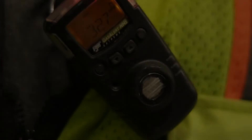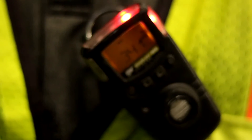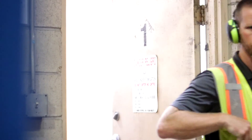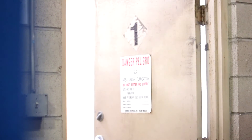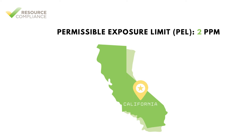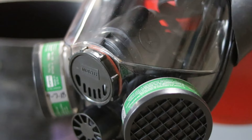It is important to know what concentration of sulfur dioxide is safe for humans. Permissible exposure limit, or PEL, is the legal limit of exposure of an employee to a chemical substance without respiratory protection. For sulfur dioxide, OSHA has mandated the PEL as 5 parts per million, but some states such as California have lowered the threshold to 2 parts per million. Exposure to concentrations above the PEL is not allowed unless respiratory protection is provided.